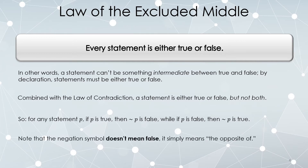It is worth considering that the negation symbol does not mean 'this is now false.' It simply means 'the opposite of.' It is completely possible for the statement not P to be true if the statement P was false. Just because it has this negation symbol in front of it doesn't mean it must be false — it still might either be true or false.